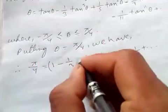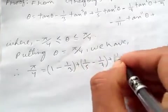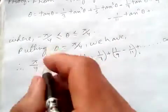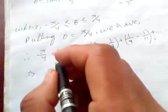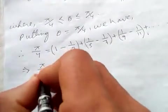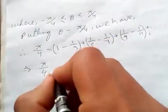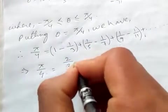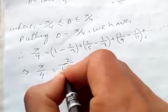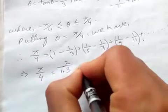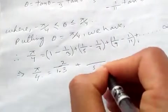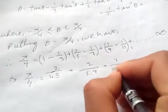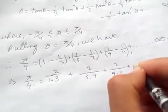Now, let's group the terms in pairs. Simplifying, we get 2 over (1 times 3) plus 2 over (5 times 7) plus 2 over (9 times 11) plus, and so on up to infinity.